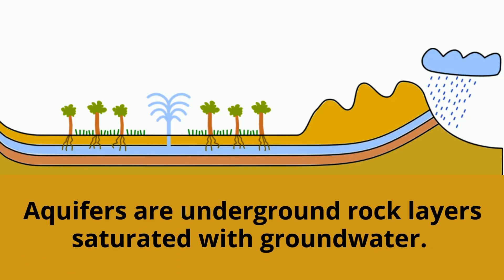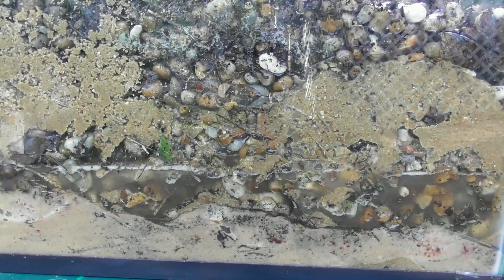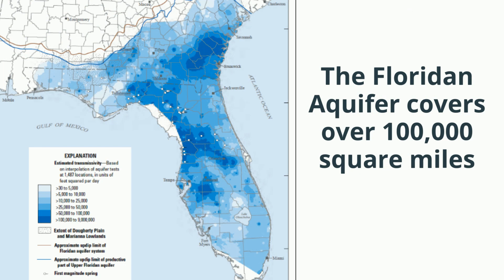Aquifers are large underground rock layers saturated with groundwater. An aquifer is not an underground river but large porous layers of rock. For example, the Floridian aquifer covers the entire state of Florida and is over 100,000 square miles.